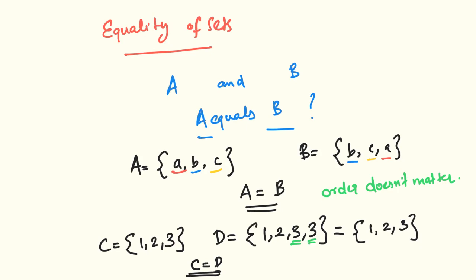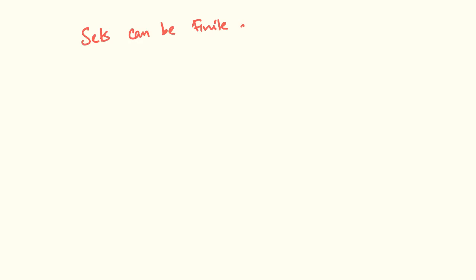Set C equals {1, 2, 3}. A set is not infinite — it has no infinite elements. Sets can be finite, meaning they have a limited number of elements.